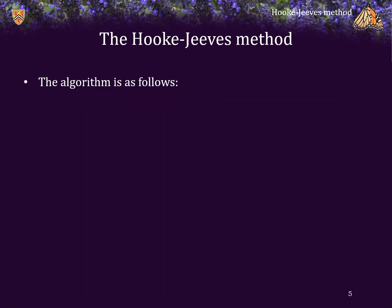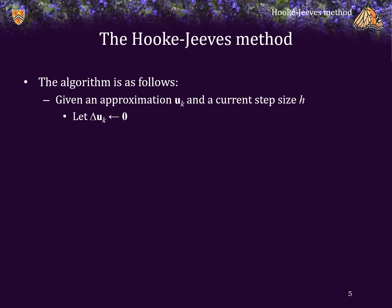The Hooke-Jeeves method is as follows. Suppose we have a current approximation u sub k and a current step size h. What we'll do is we'll start with an initial delta u sub k assigned the zero vector. We will then go through each of the n dimensions, starting with the first.